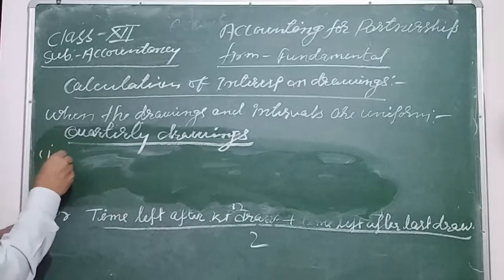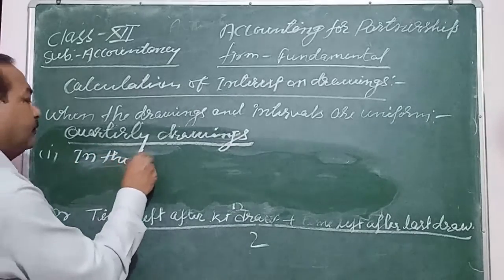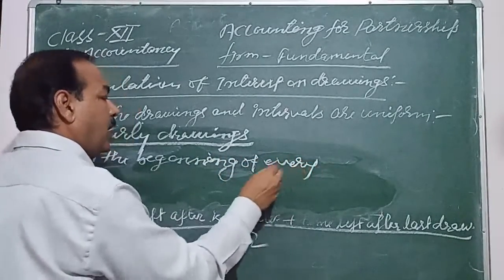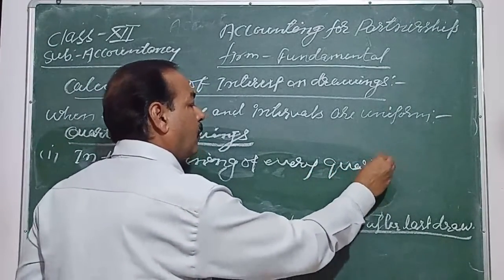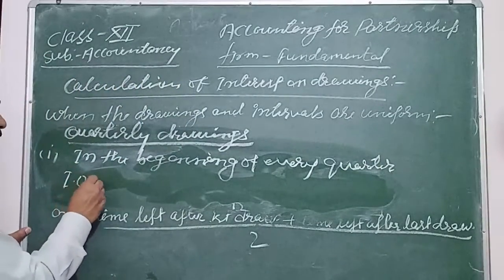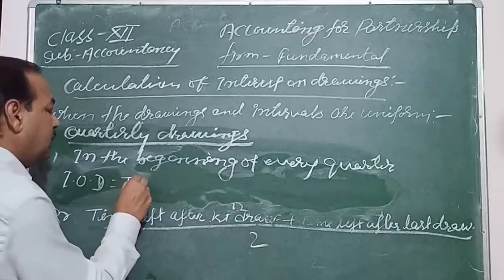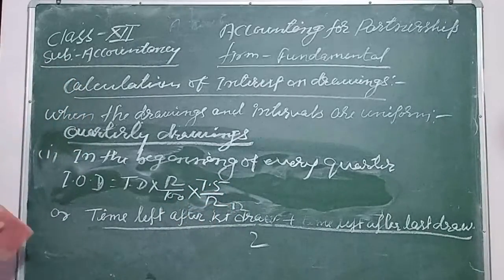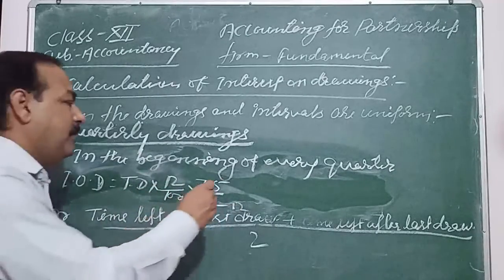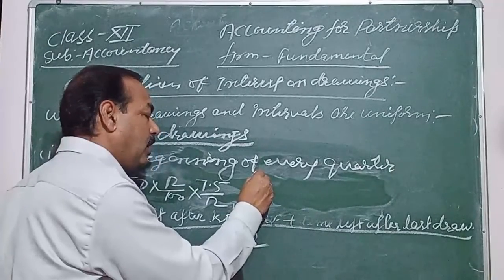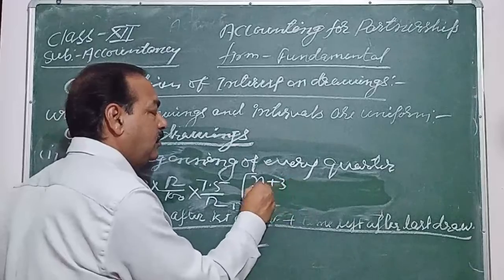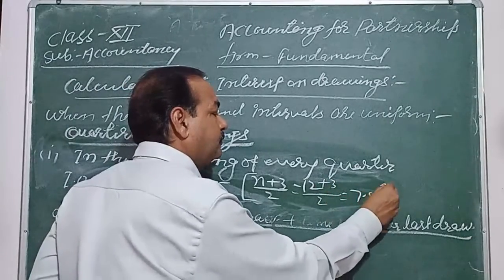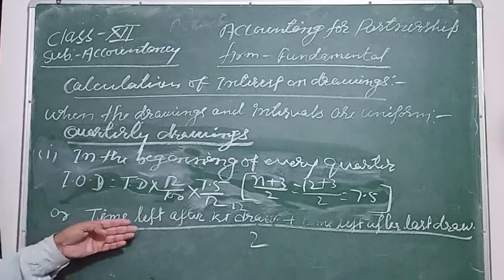For quarterly drawings at the beginning of every quarter, the formula is: Interest on Drawings = Total Drawings × Rate/100 × 7.5/12. The 7.5 comes from the formula (n+3)/2. For a full year n = 12, so (12+3)/2 = 15/2 = 7.5 months.